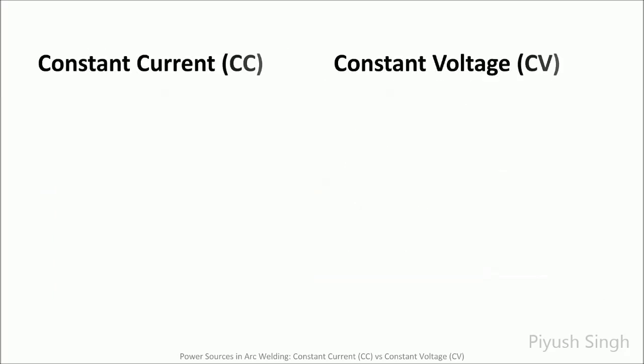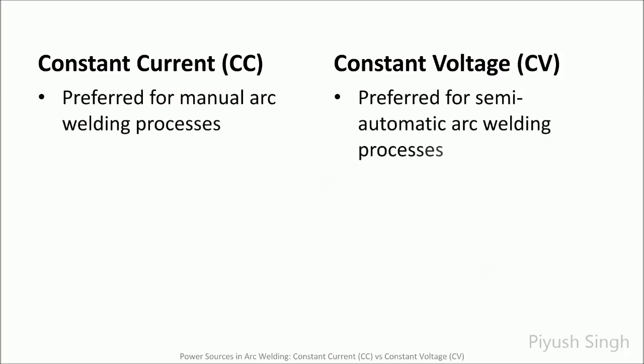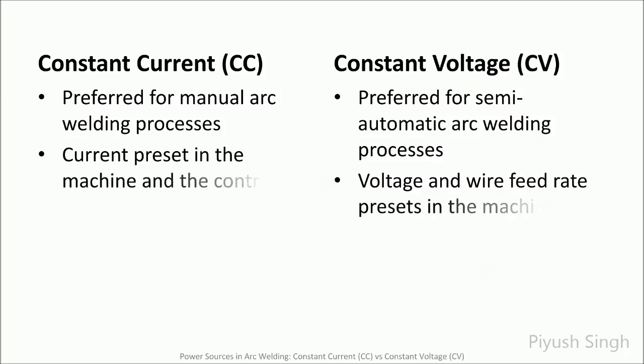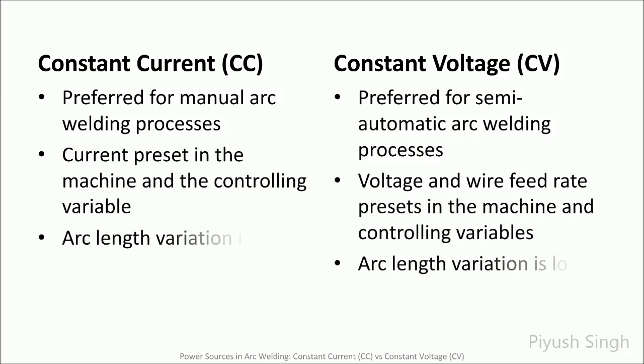In conclusion, for a stable arc, it is important to choose the correct welding power output for a given process. Use of constant current is recommended for manual processes, and constant voltage is recommended for semi-automatic processes or processes where wire is fed automatically.